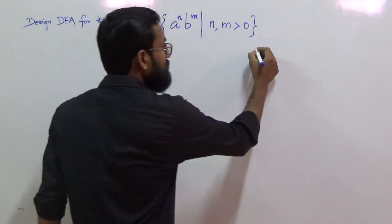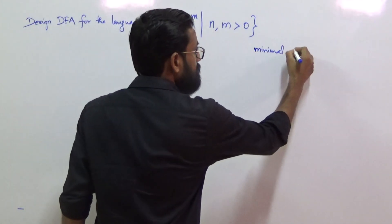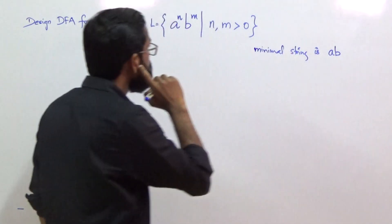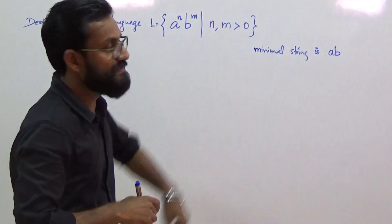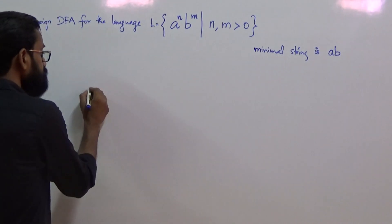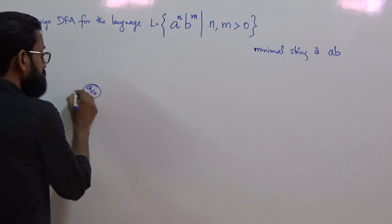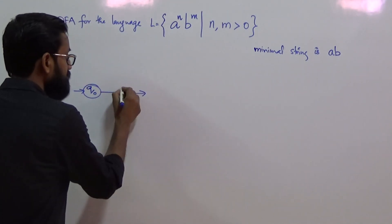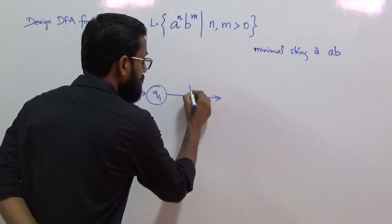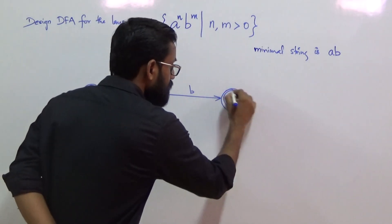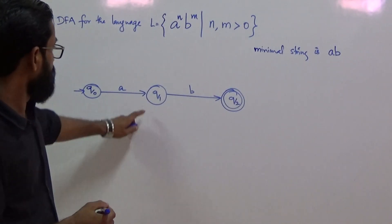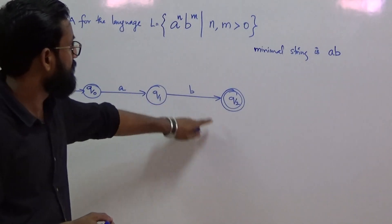The minimal string is AB because n, m > 0. So first construct the transition diagram that accepts the minimal string. From the start state, by consuming A it will go to state q1. From q1, by consuming B it will go to state q2, and q2 is the final state. This transition diagram accepts the minimal string AB.